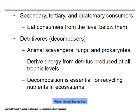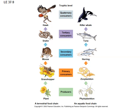Decomposition is essential for recycling nutrients in the ecosystem. Here are your levels: producers — a plant on land, phytoplankton in the ocean — then a grasshopper eating the plant, a mouse eating the grasshopper, a snake eating the mouse, and a hawk eating the snake. Every time you go up a level, you are losing energy. So the higher up you are, the fewer of them you will see — fewer hawks than mice, fewer mice than grasshoppers.